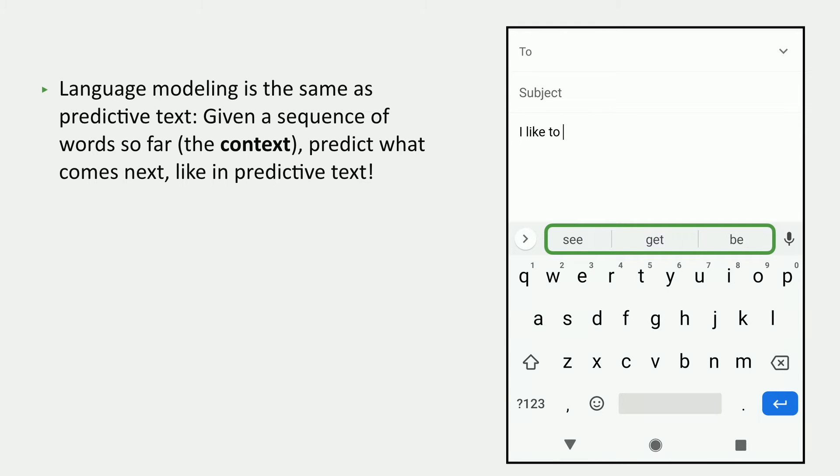This is actually the same thing as what ChatGPT is doing, just much more primitive. It has a sequence of words that it's seen so far, which we call the context, and it's trying to predict what comes next.